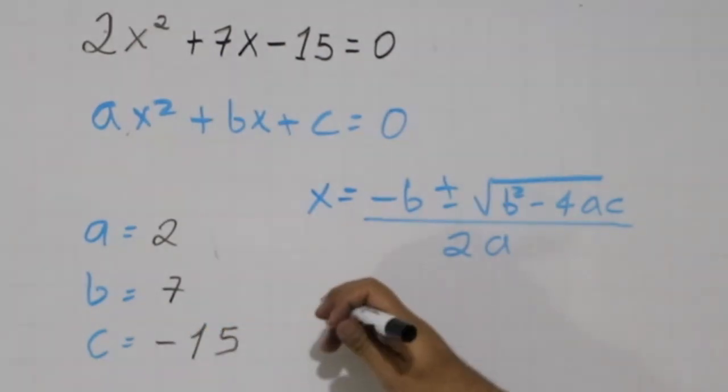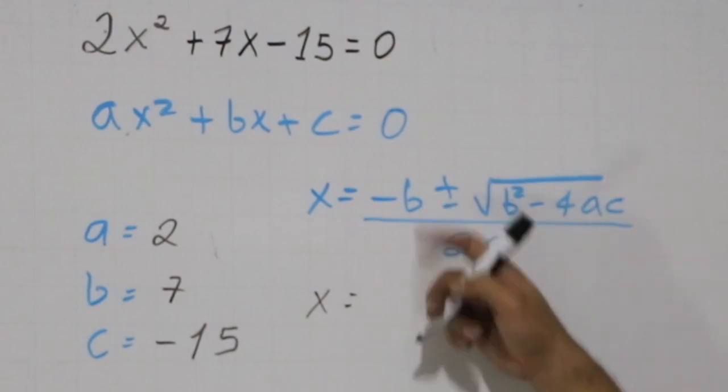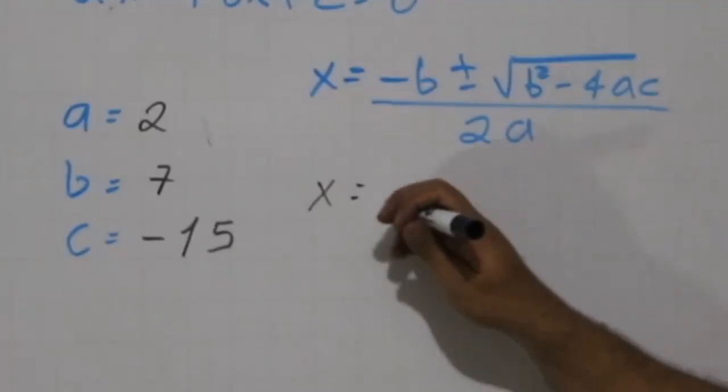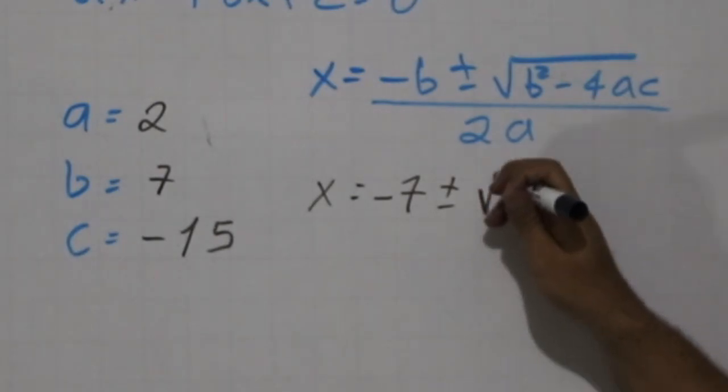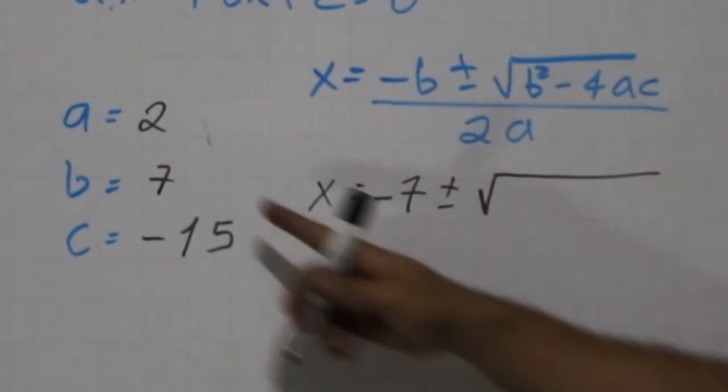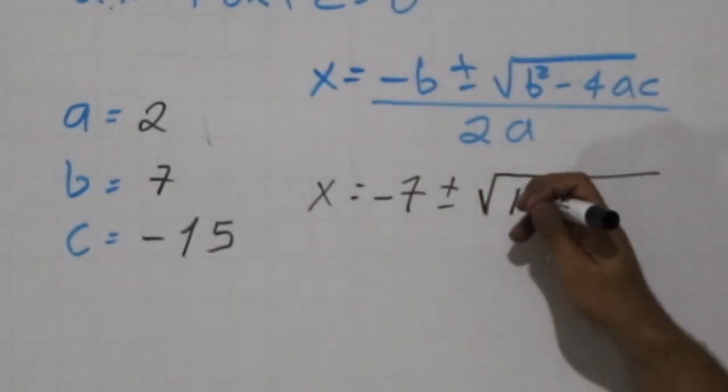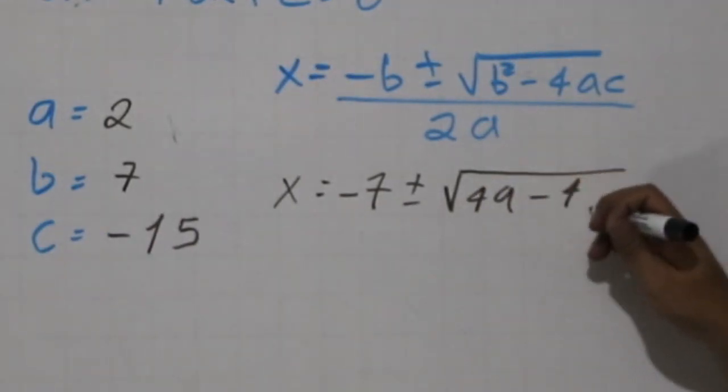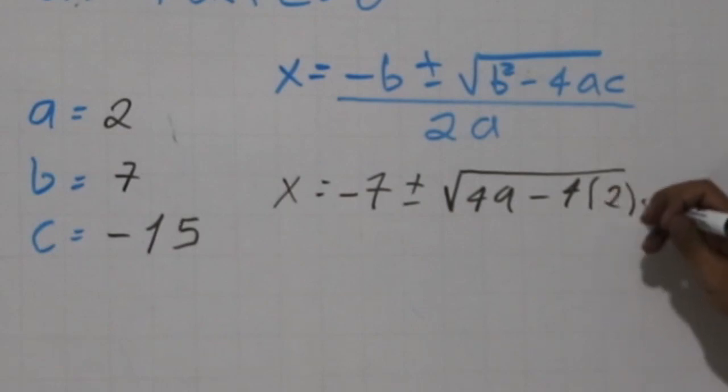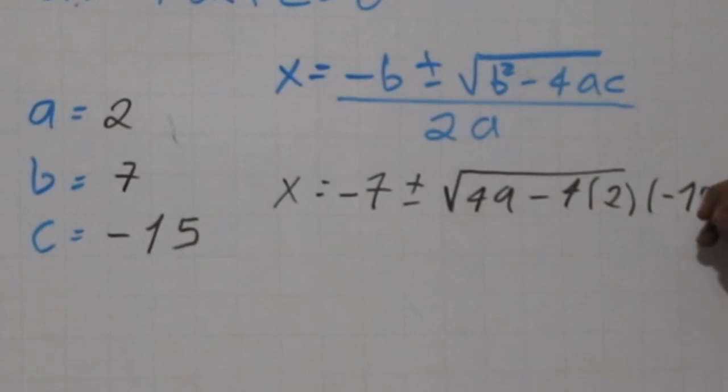So the quadratic formula is going to be really easy here. We have minus b, that's minus 7, plus minus square root, and we have b squared, that's 49, minus 4 times a equals 2, times minus 15.